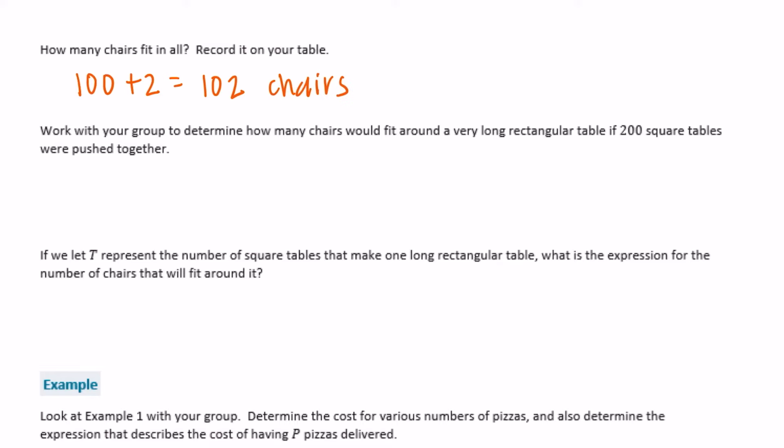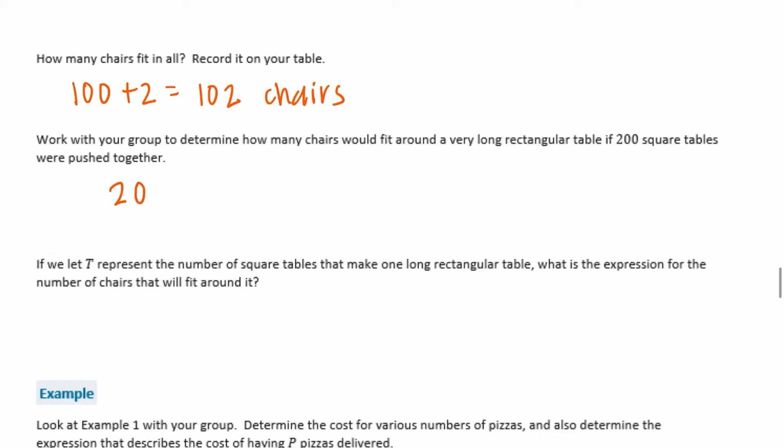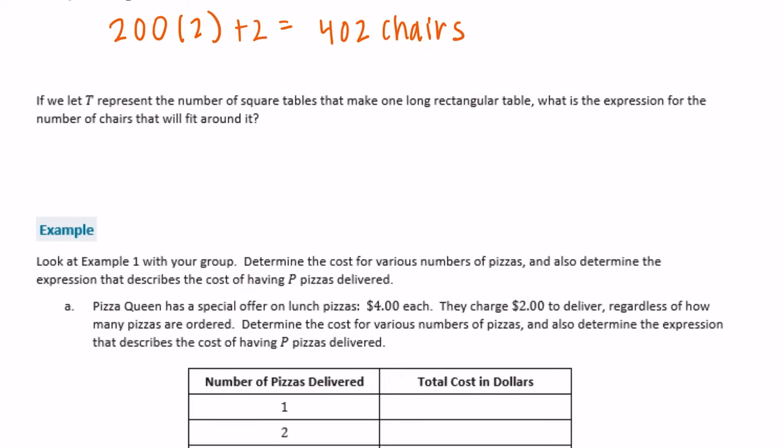Work with your group to determine how many chairs would fit around a very long rectangular table. 200 squared tables were pushed together. 200 times 2 plus 2 is 402 chairs. And then if we let t represent the number of square tables that make one long rectangular table, what is the expression for the number of chairs that will fit around? We've already done that. We said that 2 times the number of tables plus 2 would give us our chairs. 2t plus 2.